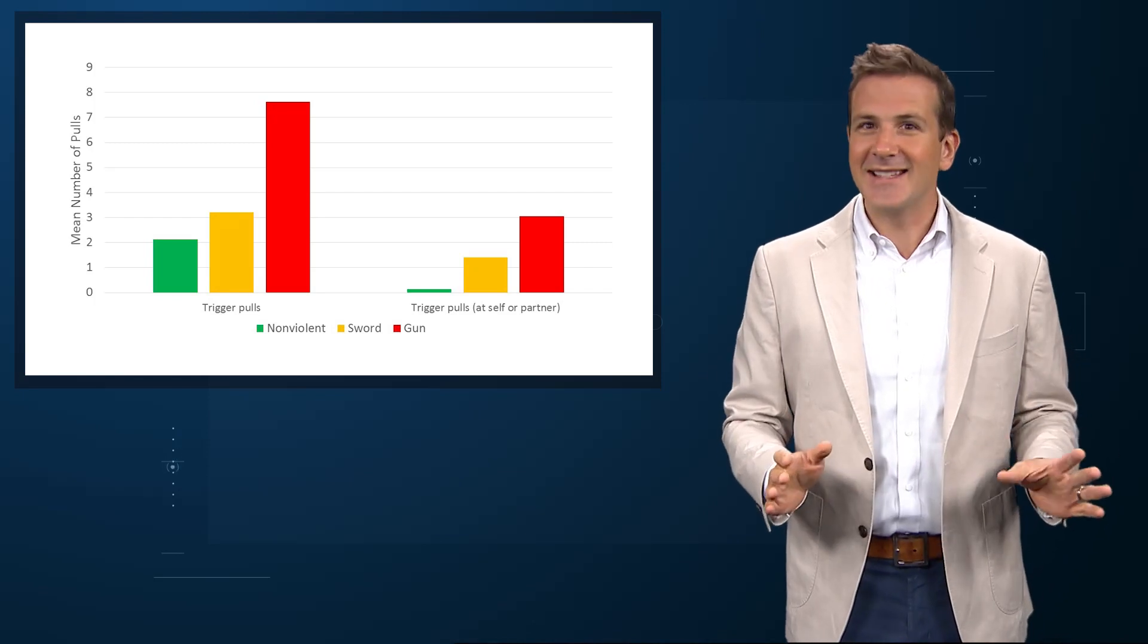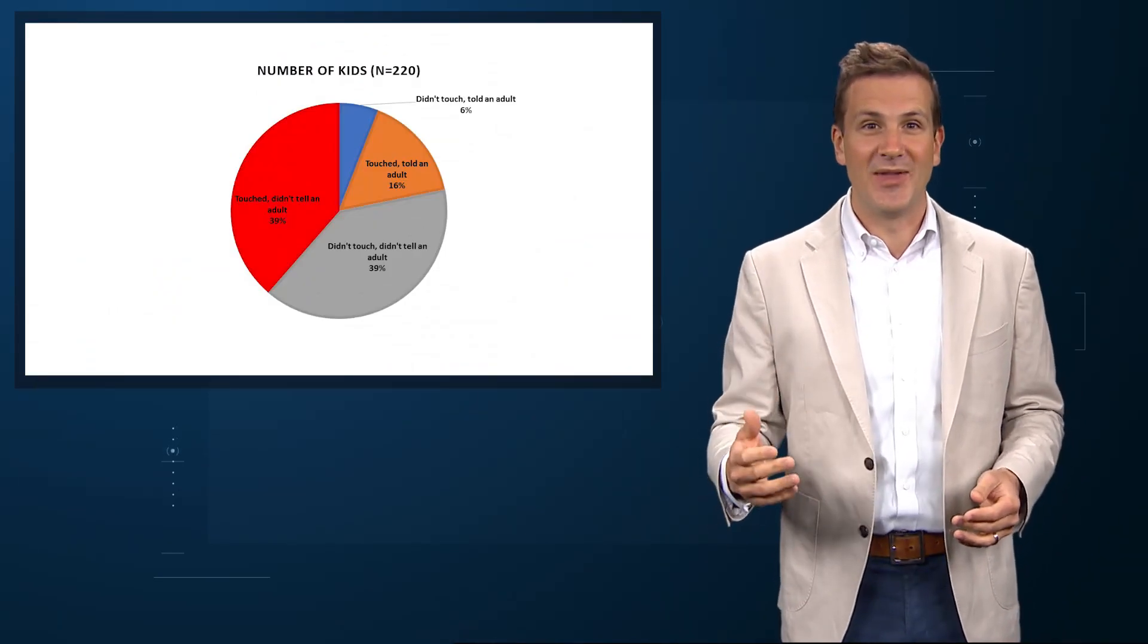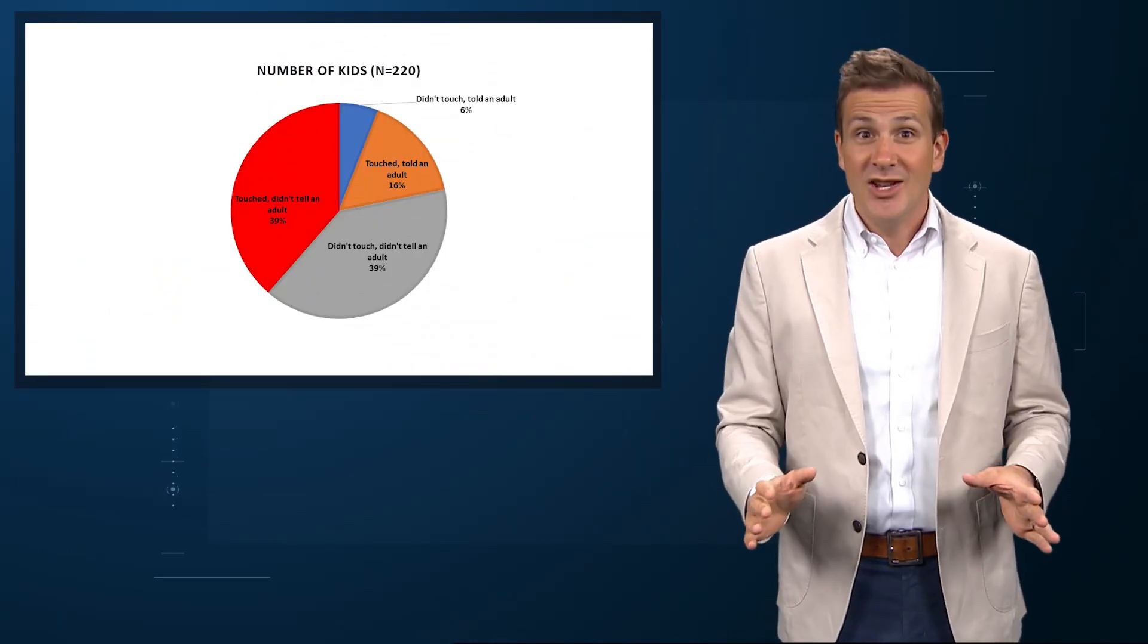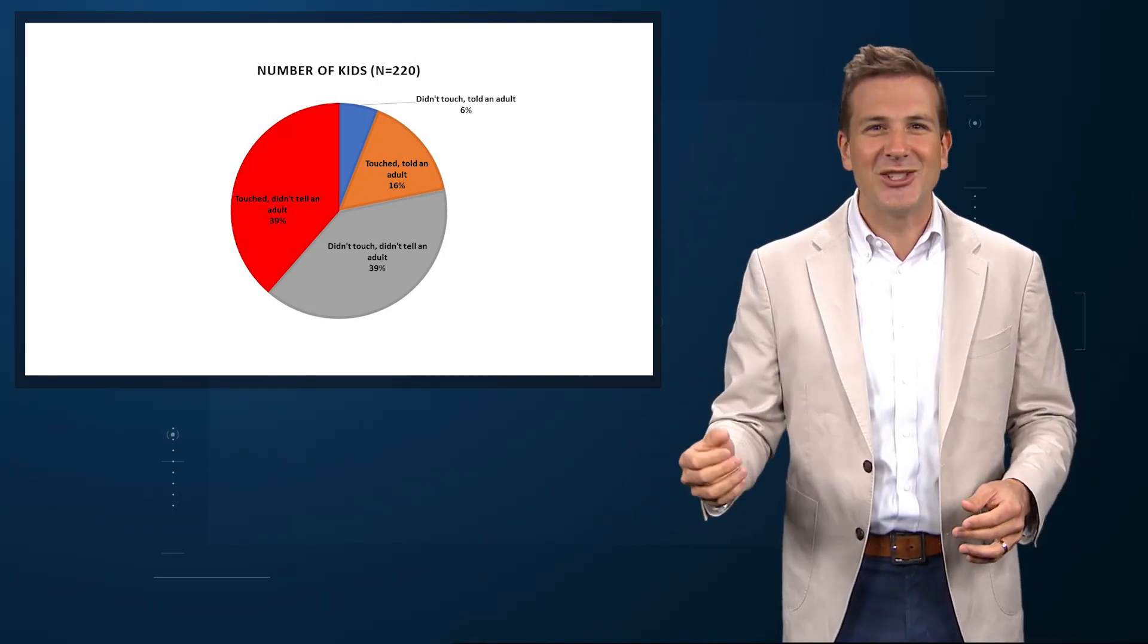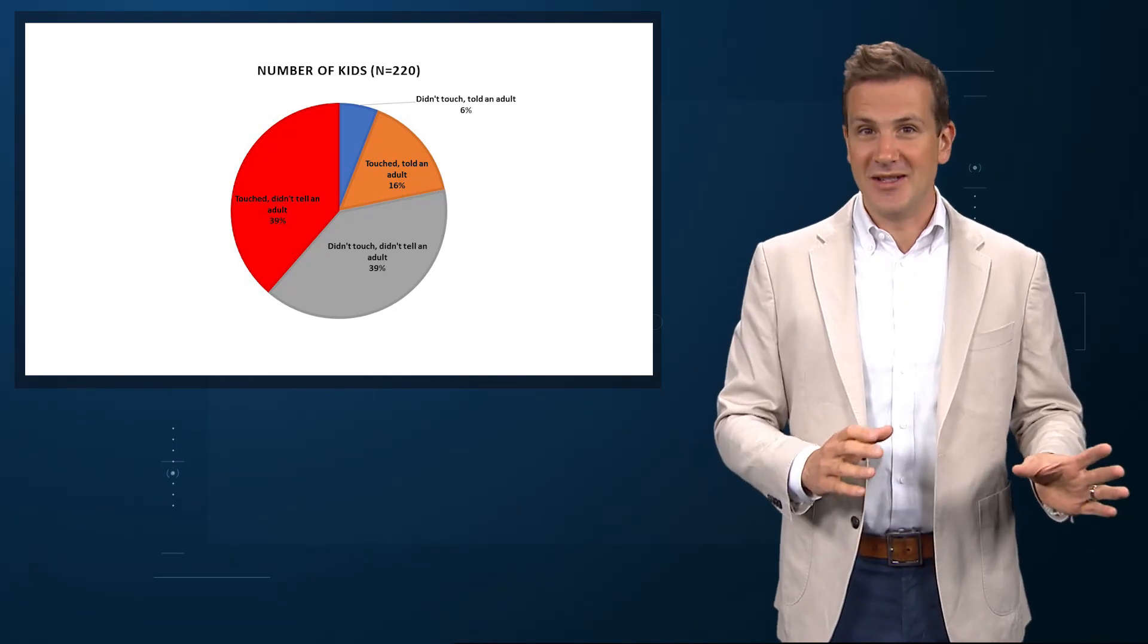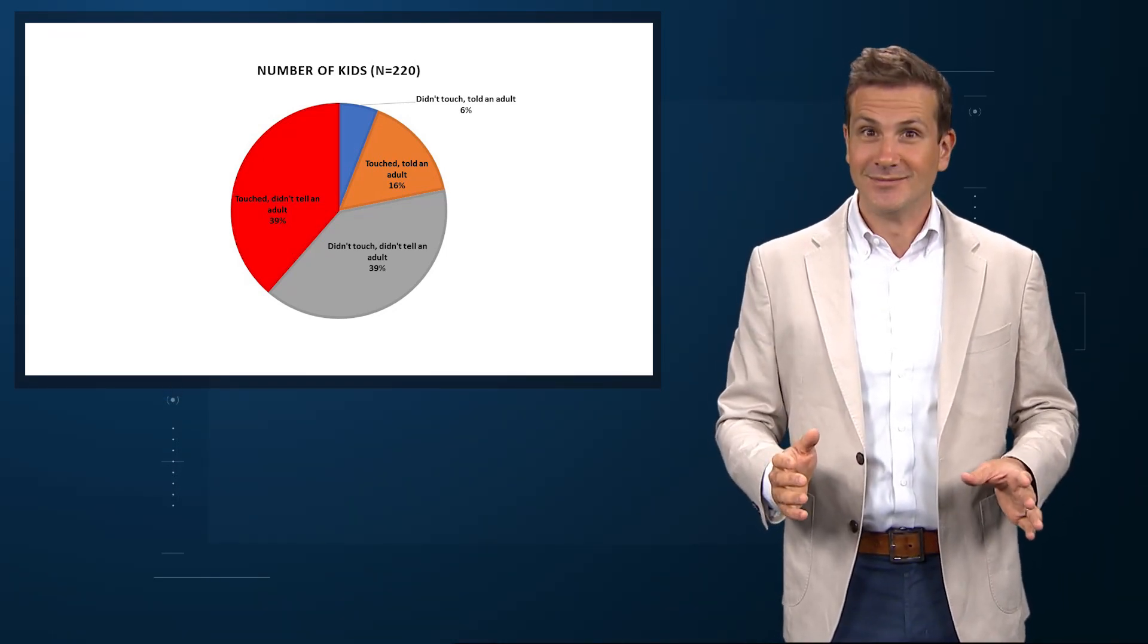But honestly, that's not what really disturbed me about this study. The disturbing thing was how these kids behaved after finding the gun. Of 220 kids who found the gun, only 13 told an adult without touching it, the thing you want your kids to do in this situation. 35 told an adult, but after touching it. Most kids never told an adult at all. Yikes.